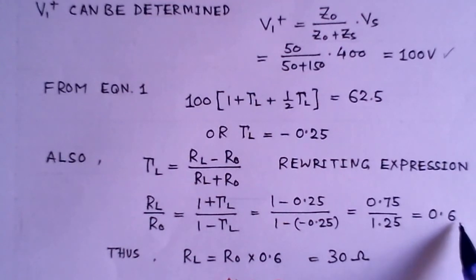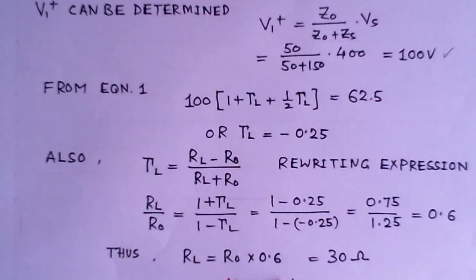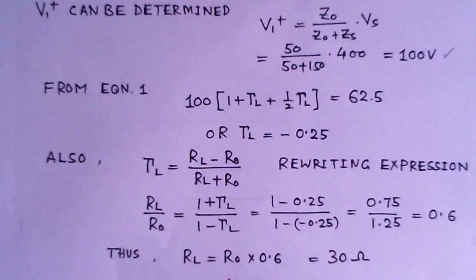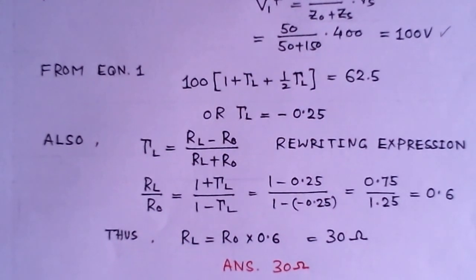This is RL over R0, 1 plus gamma L over 1 minus gamma L. This is 1 minus 0.25 over 1 minus minus 0.25. So this comes to 0.6. So the value of RL over R0 is 0.6. So RL will be R0 into 0.6. So we can determine the value of RL. So this comes out to be 30 ohms. So this is the answer to this problem.